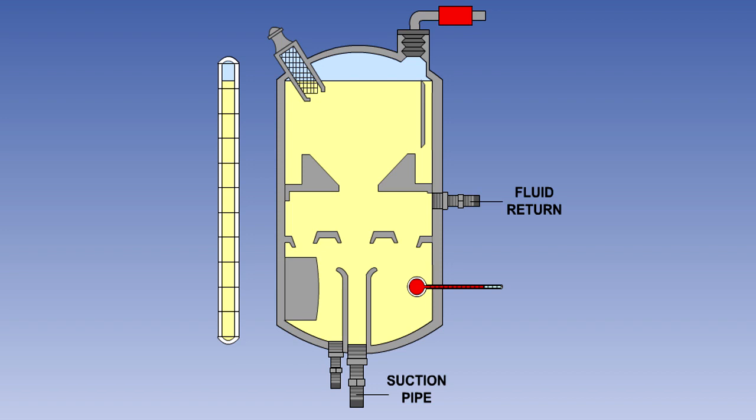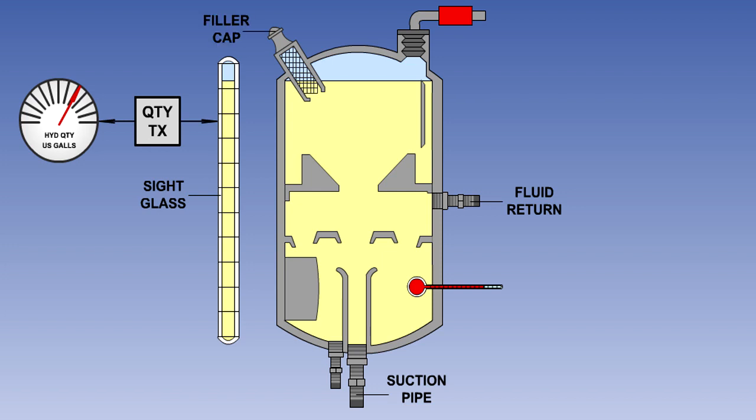The reservoir also contains connections for suction pipes to the pumps and return pipes from the system, a quantity transmitter unit to allow the flight crew to monitor the system for correct servicing and in-flight leaks, a filling inlet, normally sealed with the filler cap. Note the strainer in the filler inlet, preventing debris entering the reservoir, and in some cases, a temperature sensing probe, which may be used to operate a fluid temperature gauge and or an over-temperature warning light.